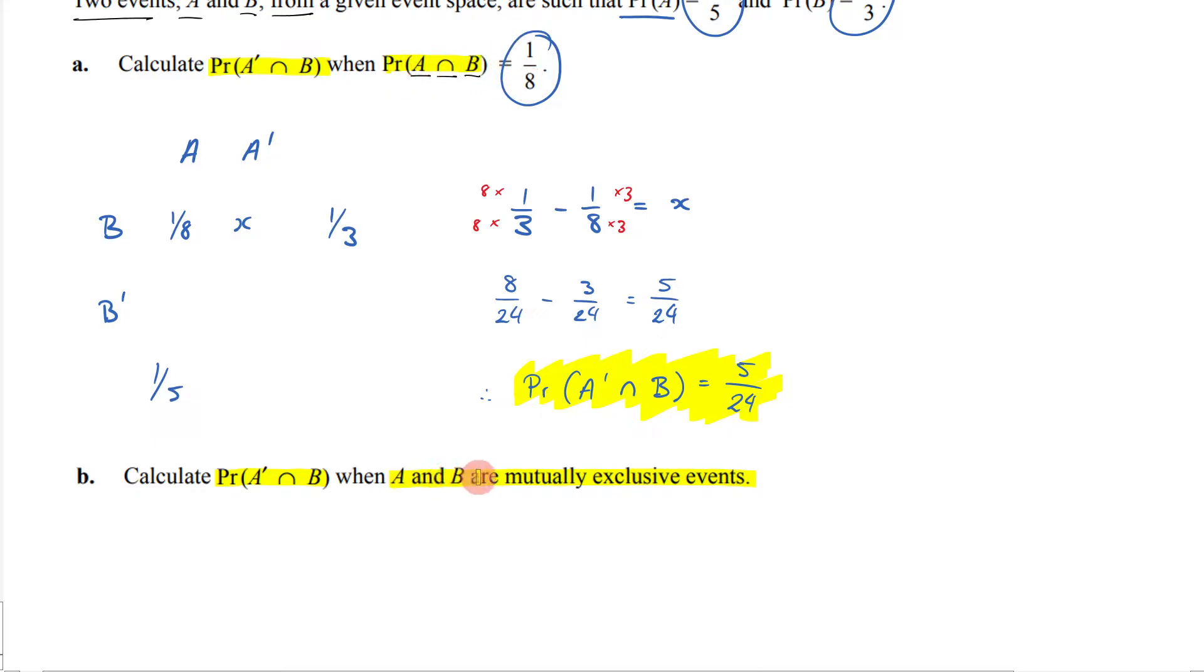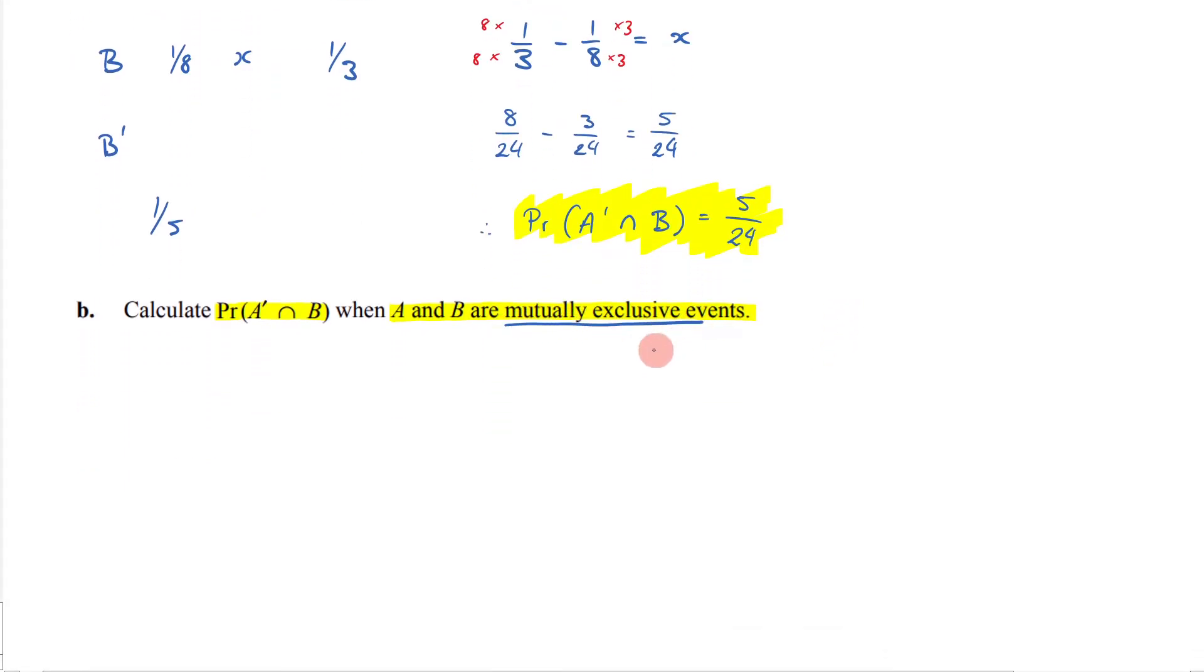rather they're telling me that A and B are mutually exclusive events. What does that mean? What can we say about mutually exclusive events?